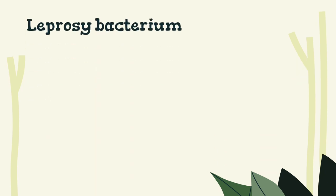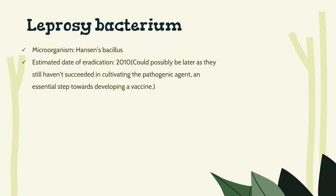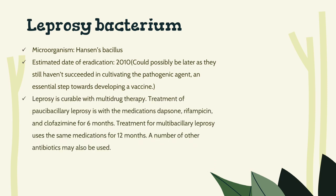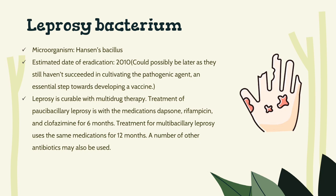Leprosy Bacterium — Hansen's Bacillus. Estimated date of eradication: 2010, but could possibly be later as they still haven't succeeded in cultivating the pathogenic agent, an essential step towards developing a vaccine. Leprosy is curable with multi-drug therapy. Treatment of paucibacillary leprosy is with the medications Dapsone, Rifampicin, and Clofazimine for 6 months. Treatment for multibacillary leprosy uses the same medications for 12 months. A number of other antibiotics may also be used.